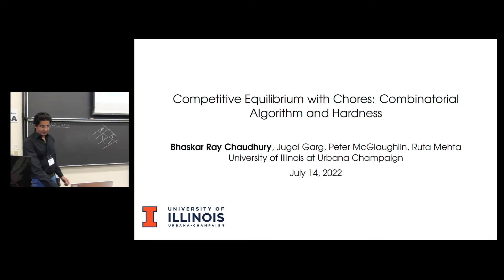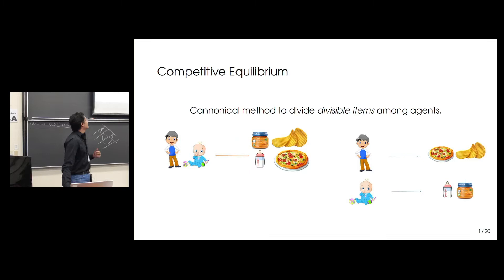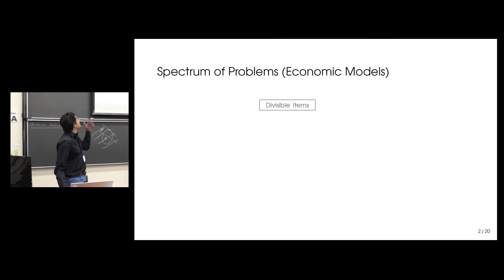Thanks for the introduction, so I'll get started. The entire talk will be about competitive equilibrium with BADs. I'll give you an overview of the results I'm going to present, so don't worry if some of the definitions are not clear — they will become explicit as the talk progresses. Competitive equilibrium is, at least in this setting, a canonical method to divide divisible items.